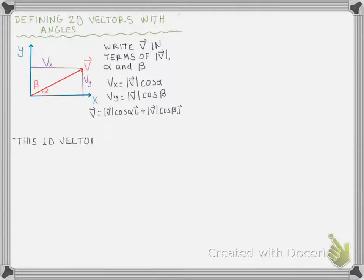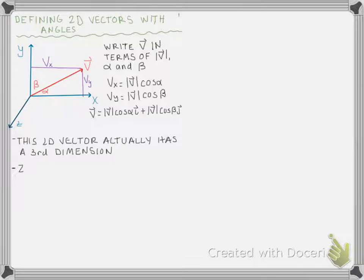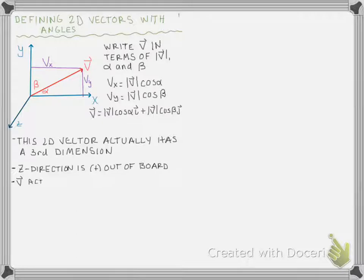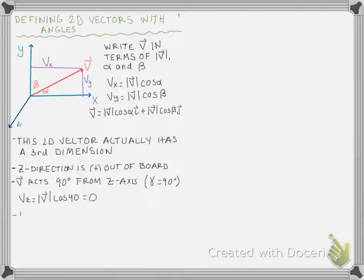This two-dimensional vector actually has a third dimension. We live in a three-dimensional world, and we often simplify problems by doing them only in two dimensions, but there really is a third dimension. That third dimension is z, and it's coming straight at you out of the board — positive z coming out of the board. The vector v acts 90 degrees from this z-axis, so we call that angle gamma, equal to 90 degrees. We could find the z component of this vector, but it ends up being zero because the cosine of 90 is zero.